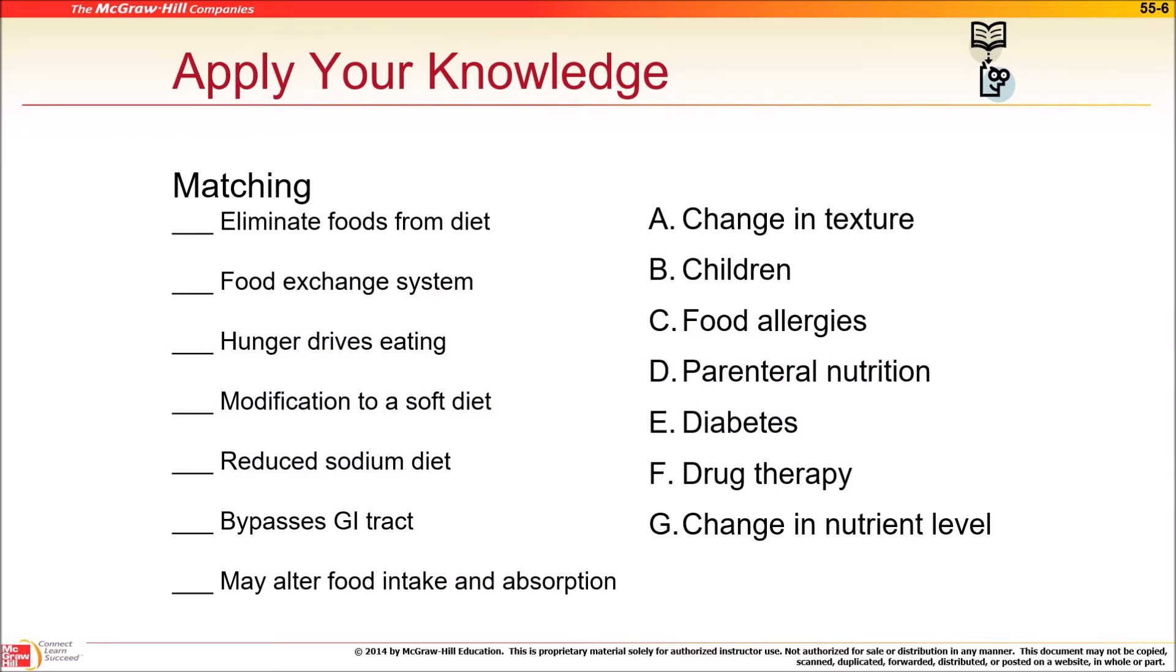Matching: eliminate foods from diet. They say C, food allergies. Duh, we were thinking somewhere else. Yeah, eliminate foods from diet if you have allergies. Food exchange system. Why do we have food exchange? This has to do with diabetes. That's how fast certain foods turn into sugar. You can swap one potato for five pounds of fish. One soda for ten pounds of garlic. That's all based on controlling blood sugar. Hunger drives eating.